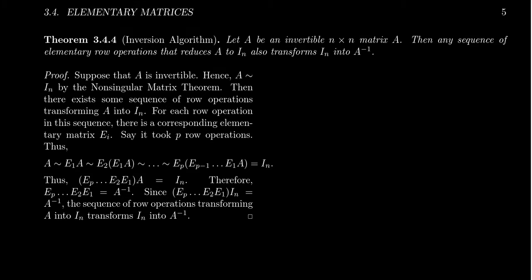In the non-singular matrix theorem, we saw that an n-by-n matrix A is invertible if and only if it's row equivalent to the identity matrix. It turns out that the process of row reducing A into I can produce the inverse matrix A inverse. This is going to come about from using elementary row operations, but we can also turn these elementary row operations into matrix multiplication using elementary matrices that we introduced in the previous video.